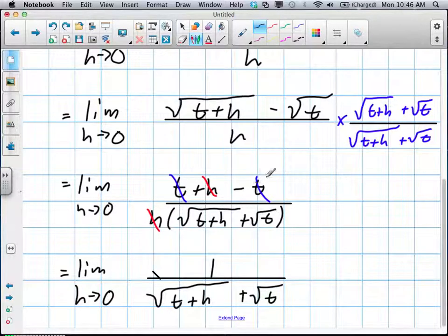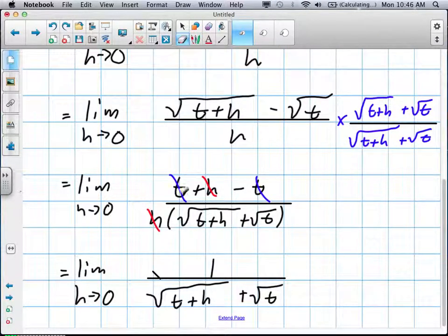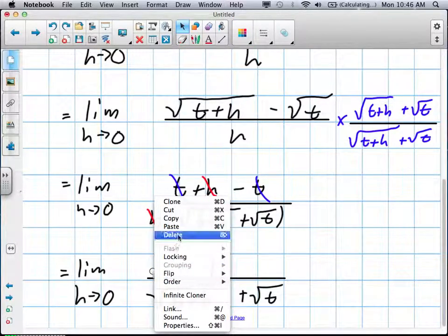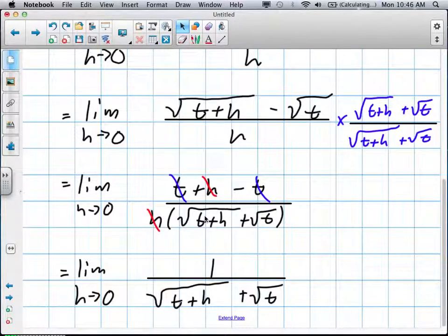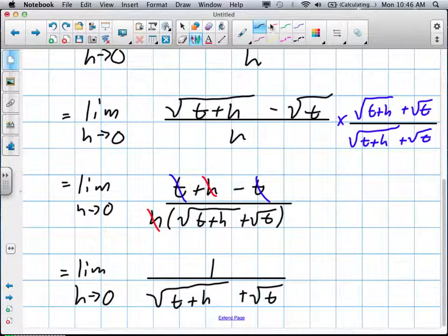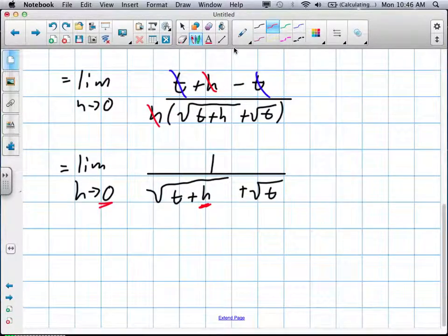We have these values now because our h, or our bottom of the fraction, is no longer going to be 0. So we won't be indeterminate. We can now take our value of 0, or approximately 0, and plug it in for our h.